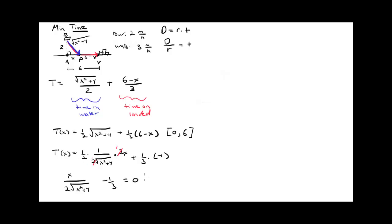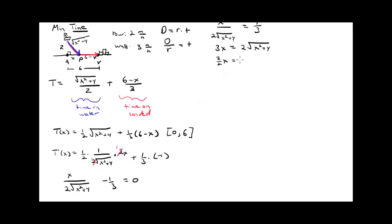Setting T'(x) = 0: I add 1/3 to both sides, then cross-multiply by 3 times 2√(x² + 4) to get 3x = 2√(x² + 4). This is a radical equation, so I isolate the radical by dividing both sides by 2: (3/2)x = √(x² + 4). Then I square both sides to get (9/4)x² = x² + 4. Note: squaring both sides can introduce extraneous solutions.